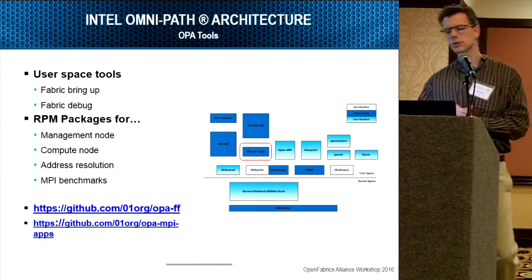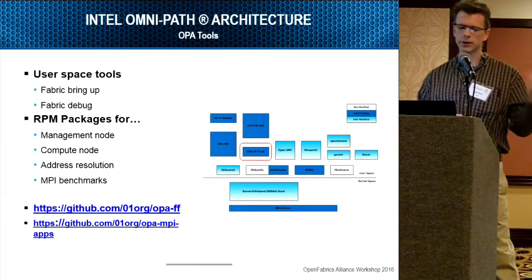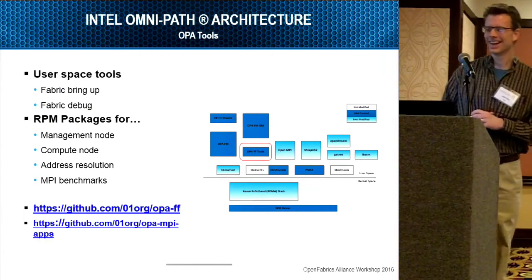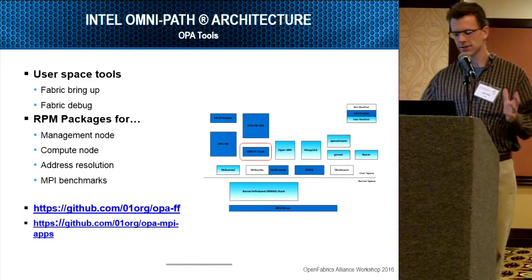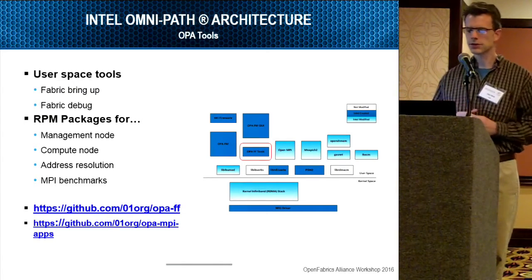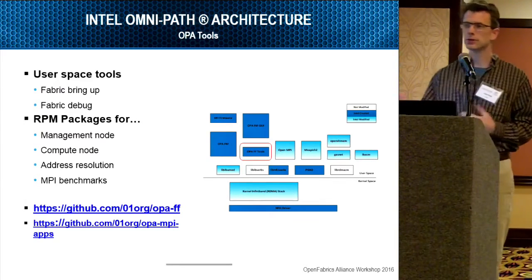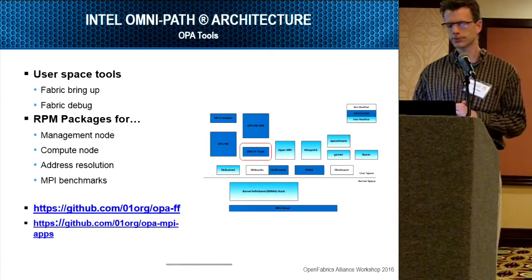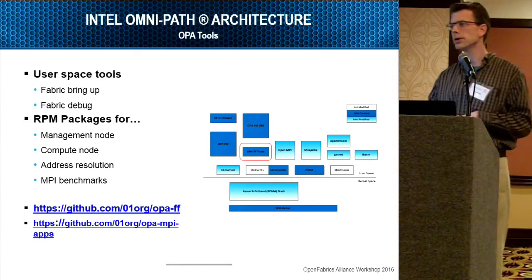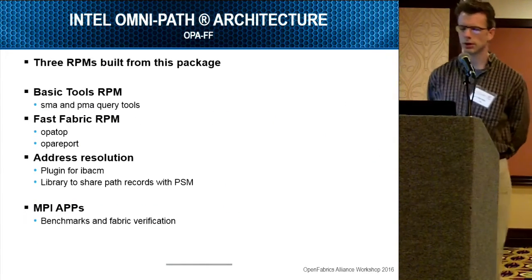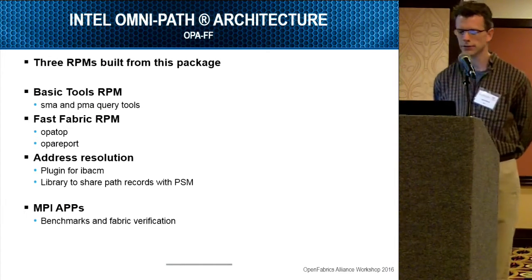We also have a set of user space tools which allow you to bring up your fabric and debug it when there are problems — not that there will be problems. We've created RPM packages specific for the management node, which have more privileges, and then a set of tools for the compute nodes. We also have an RPM package for address resolution to enhance IBACM and pass path records around the network, as well as an MPI benchmarks RPM that allows fabric verification using OpenMPI and MVAPICH.